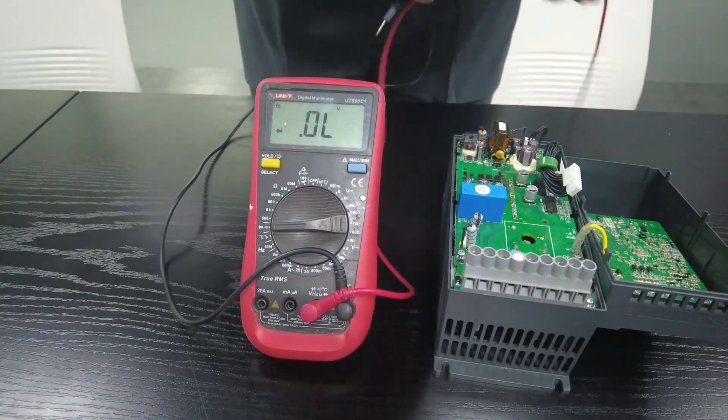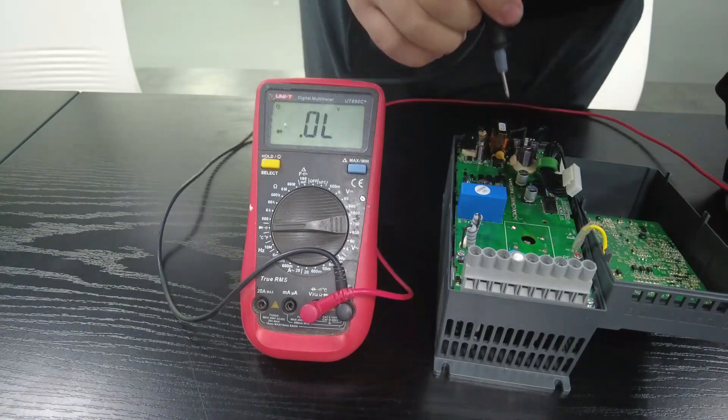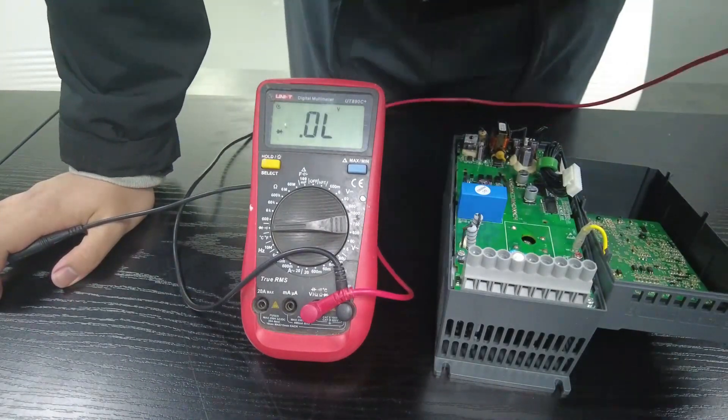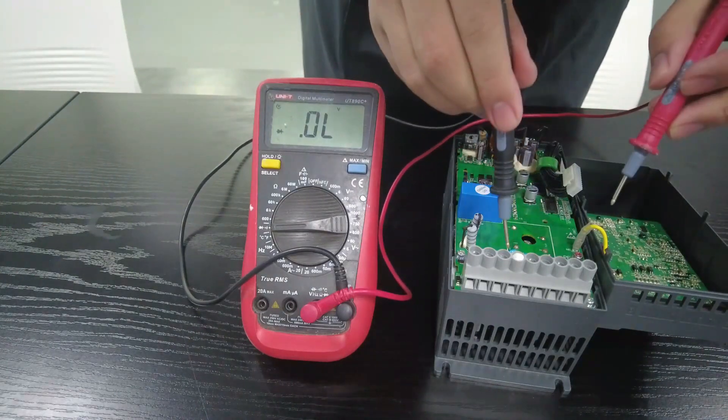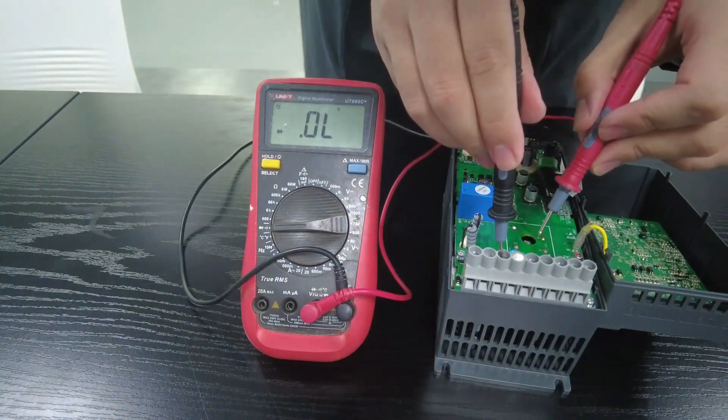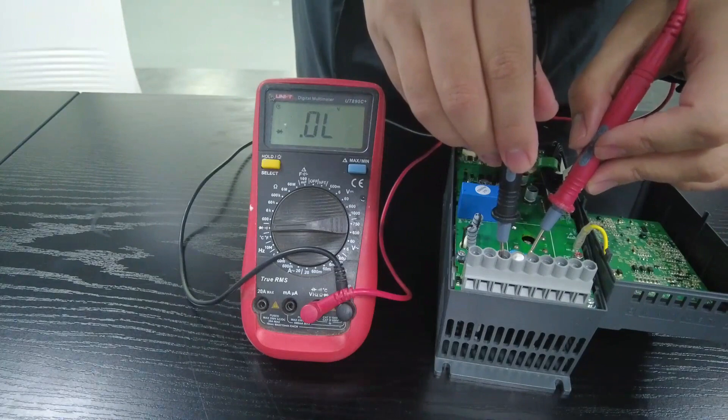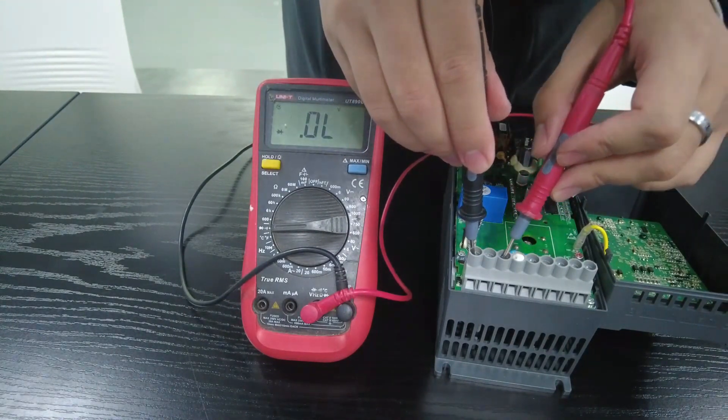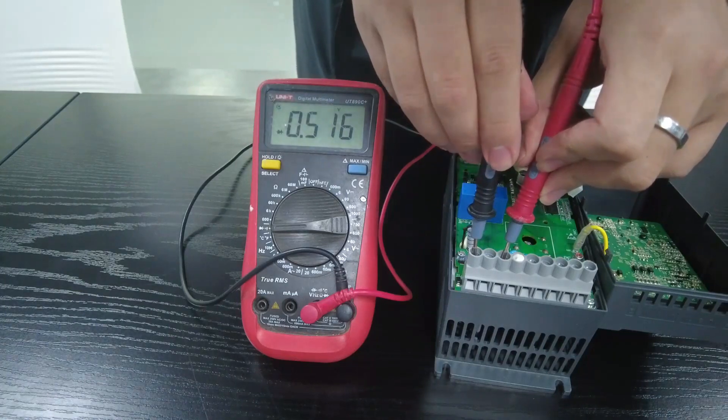Set the multimeter to the position of the diode. Connect the black test lead to the positive terminal and then use the red test lead to test the R, S, and T terminals in sequence. This is normal if the measured values are all around 0.5.